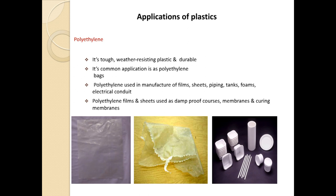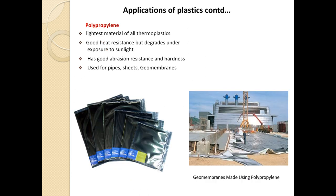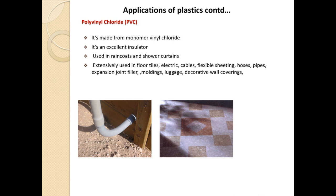Next is polypropylene, which is also widely used. It is the lightest material among all thermoplastics, has good heat resistance, but degrades under exposure to sunlight. Polypropylene has good abrasion resistance and hardness. It is used for pipes, sheets, and geomembrane applications.